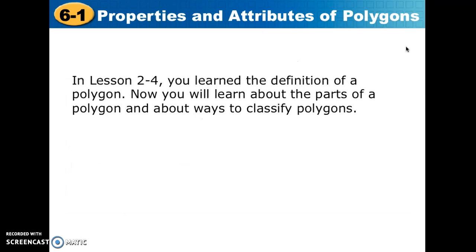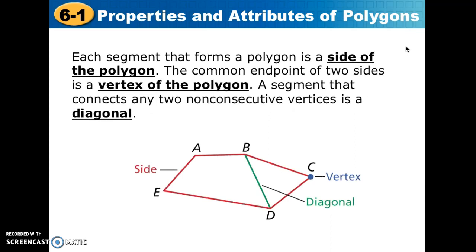Previously we learned about what a polygon is and now we're going to take a closer look at the definition and the characteristics. The polygon is made up of the red sides that are segments between points A and B, B and C, C and D, D and E, and E and A. We're going to call those sides of the polygon — they make up the outside. Where two segments come together, such as point C, we're going to call that a vertex. So we have five vertices on this polygon.